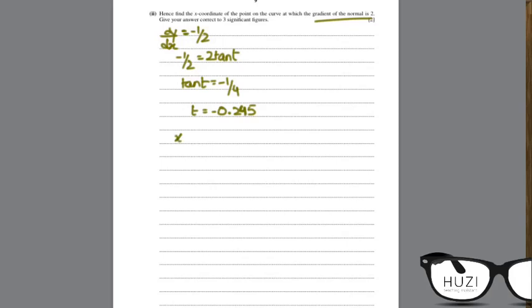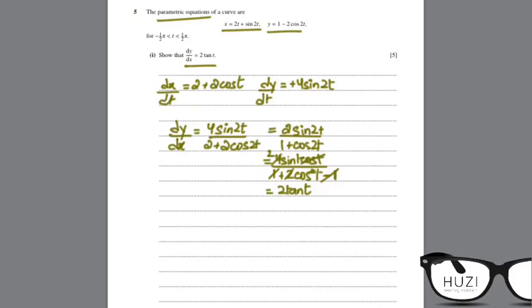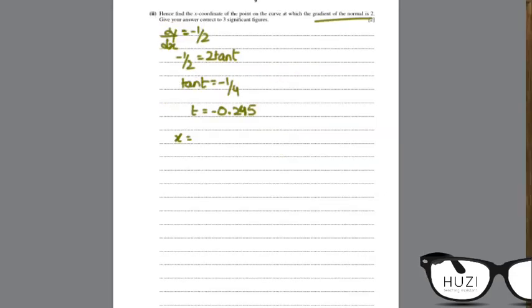You plug this into the equation for x. The equation for x was 2t plus sin 2t. And your final answer is minus 0.961.